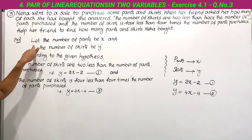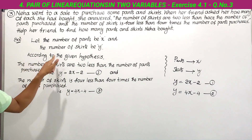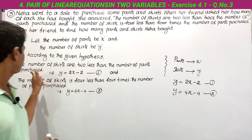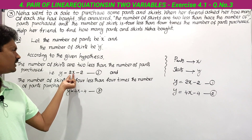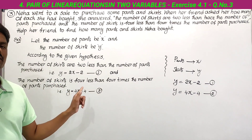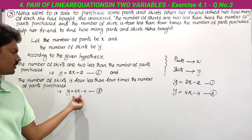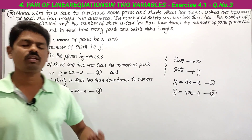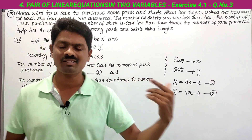So, writing the solution: let the number of pants be x and the number of skirts be y. First equation — the number of skirts are 2 less than twice the number of pants: y = 2x − 2 (Equation 1). Second — the number of skirts is 4 less than 4 times the number of pants: y = 4x − 4 (Equation 2). These two are our formed equations. If asked to solve using a graph, you would solve them as we did in the second problem.